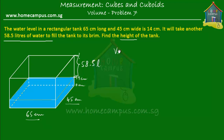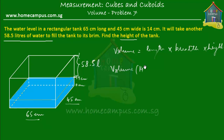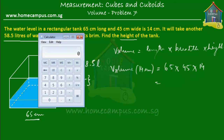Volume is equal to length times breadth times height. The volume of water until 14 cm would be equal to the length, which is 65 cm, times the breadth, which is 45 cm, times the height, which is 14 cm. That gives us the volume of water already in the tank. So this is 65 times 45 times 14 — let me simply use a calculator: 65 times 45 times 14.